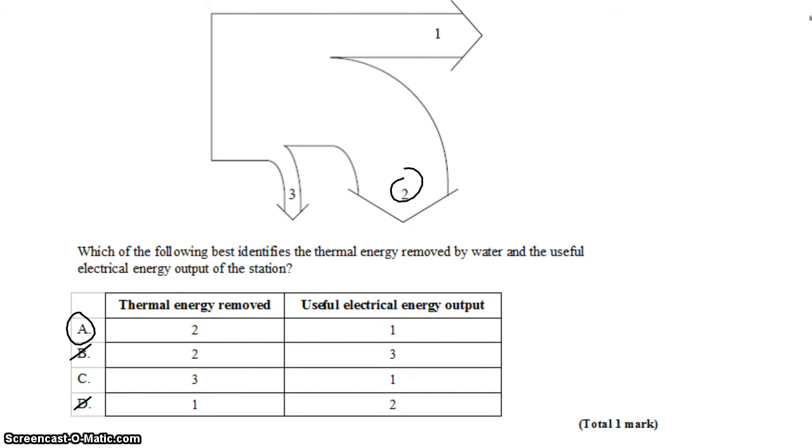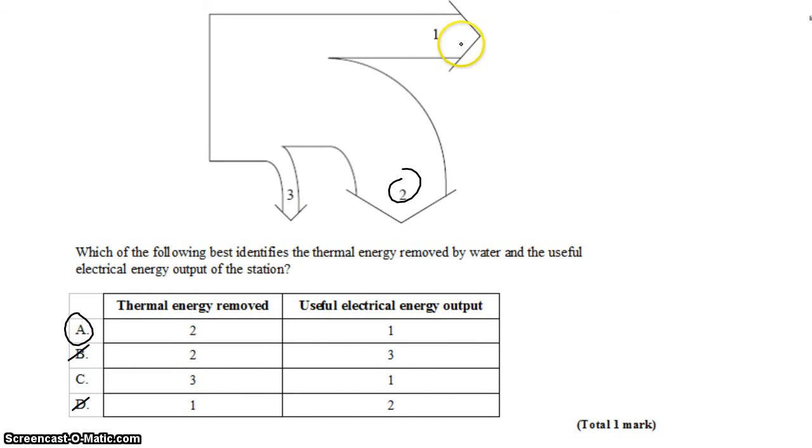The other reason that I think the useful energy output would be 1 and not 3, now that we've eliminated 2, is that 3 is just awfully small. 3 is about 10 percent, maybe? And if we were getting 10 percent from our power plants, that would just be criminal.